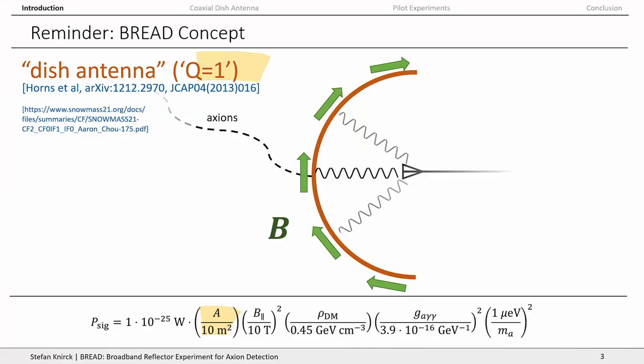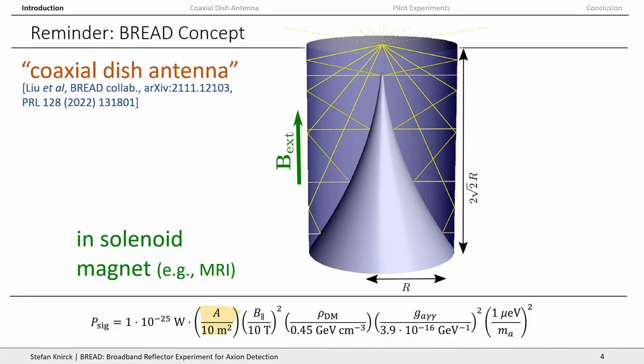The downside is the magnetic field has a very unusual shape, so you'd have to spend a lot of money to build a magnet like that. Our proposal is: can we do something like this but use a solenoid magnet? We came up with the coaxial dish antenna concept — you use a cylindrical dish antenna placed inside a solenoid magnet with the magnetic field going vertically. The cylindrical dish emits photons perpendicular to the dish surface, and you put a reflector geometry inside that focuses the radiation onto a common focal spot where you place your photon detector.